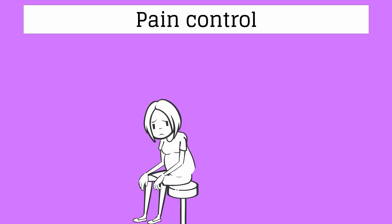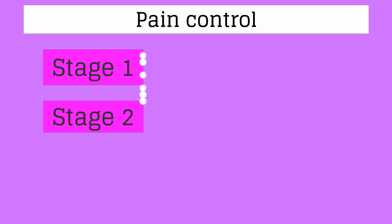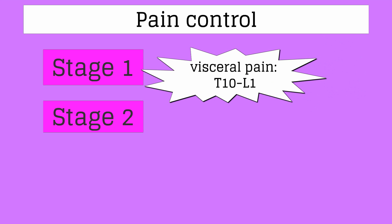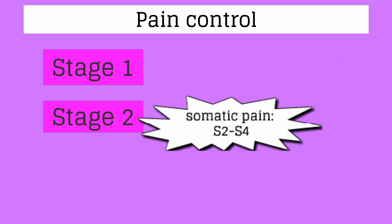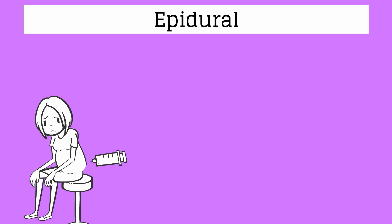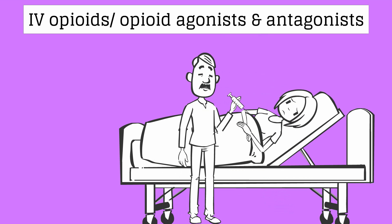Lavora would like to discuss pain management options during labor. Labor results in severe pain for most women. During stage 1, pain results from contractions and cervical dilation, causing visceral pain at levels T10 to L1. As labor progresses, the fetal head distends the lower birth canal and perineum, resulting in somatic pain transmitted through S2 to S4. The epidural block is the most effective form of intrapartum pain relief in the United States, infusing local anesthetic or narcotics through a catheter into the epidural space. IV opioids and opioid agonist-antagonists can also be used, though their primary mechanism of pain relief is via sedation.